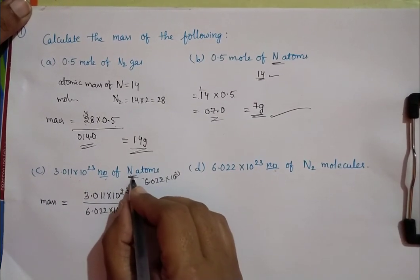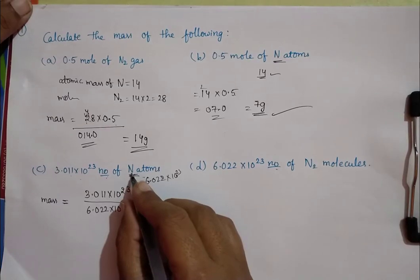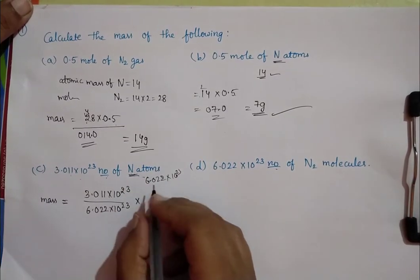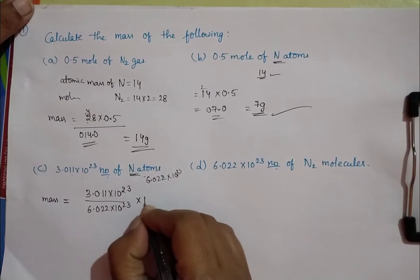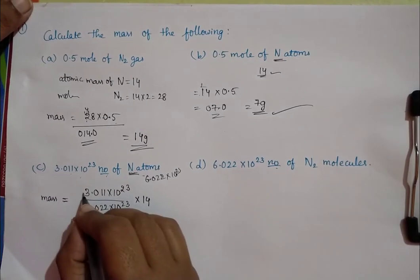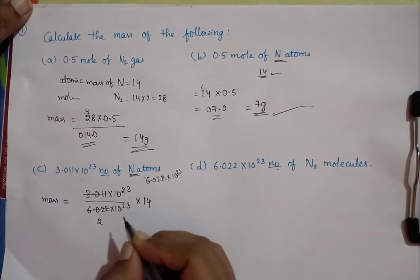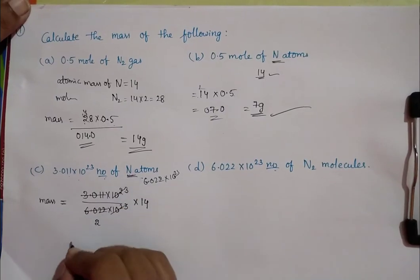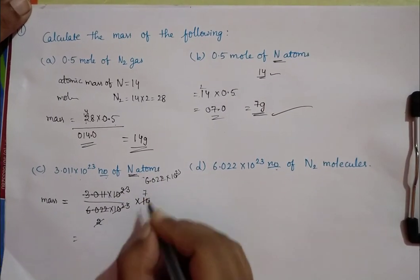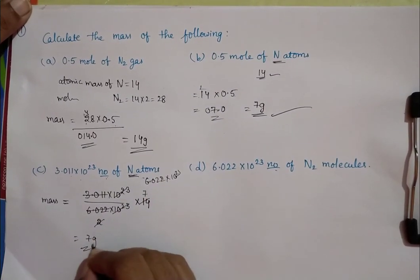Into atom is there. So, we have to use atomic number of sodium, sorry, nitrogen. Atomic mass of nitrogen is 14. This is the double of it, right? This gets cancelled. Answer is 7 grams.